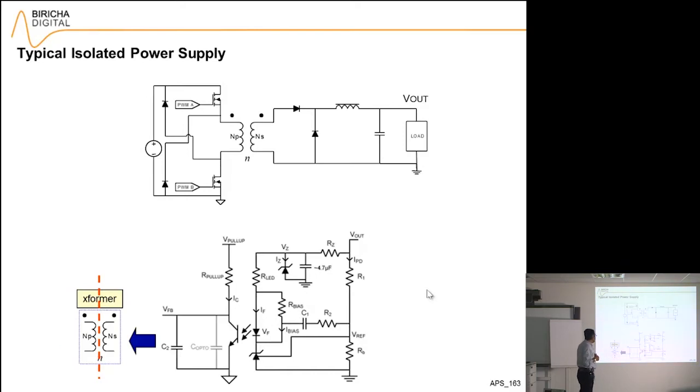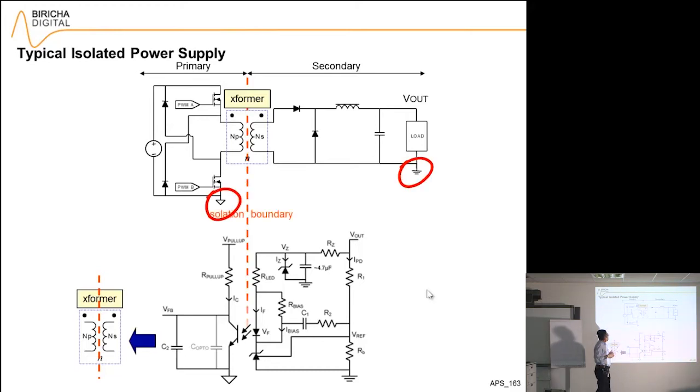So here I have got a standard two-switch forward converter. Here you can see the transformer, and this is my primary side, this is my transformer, and this is my secondary side. You will see that the grounds have different symbols because they are referenced to different grounds, and this is the isolation boundary.